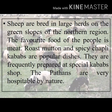Sheep are bred in large herds on the green slopes of the northern region (shumali khitay ki sarsabz dhilwanon par bheron ke bade bade rewar pale jate hain). The favorite food of the people is meat (logon ki pasandida ghiza gosht hai). Roast mutton and spicy chapli kebabs are popular dishes (guna hua bhagra gosht aur masaledar chapli kebabs inke pasandida khane hain). They are frequently prepared at special chapli kebab shops.